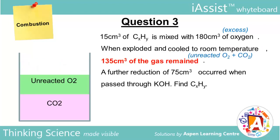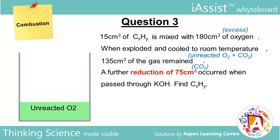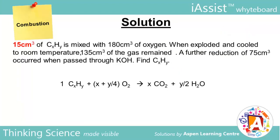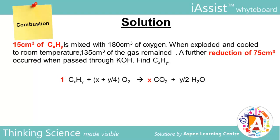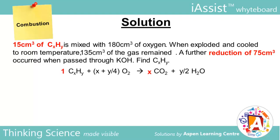The only gases remaining after cooling are unreacted oxygen and CO2. When passed through KOH, acidic CO2 gas will be removed, leaving behind O2 gas. There are 15 cm³ of CXHY and 75 cm³ of CO2, and the molar ratio in this question is 1 to x. Recall from Question 1 Part A that molar ratio equals volume ratio. Hence, 1 over x equals 15 over 75, so x is 5.